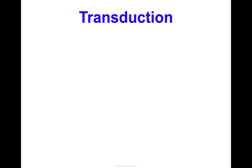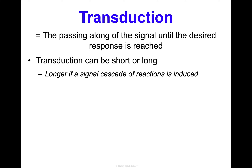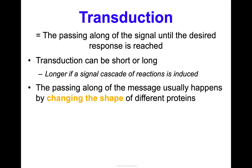Transduction is the passing along of the signal until the desired response is reached. This can be a short process — from the receptor right to a response — or it can be very long if a signal cascade of reactions is induced, where one thing causes another, which causes another, and so on. The passing along of the message usually happens by changing the shape of different proteins; that's how these signals get turned on and off and passed along.